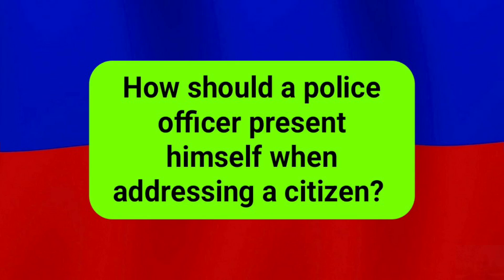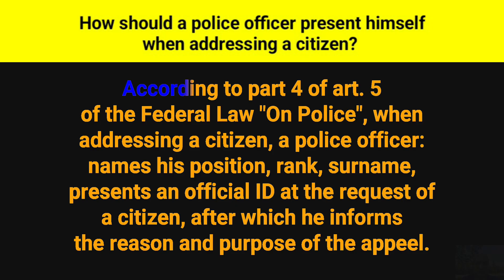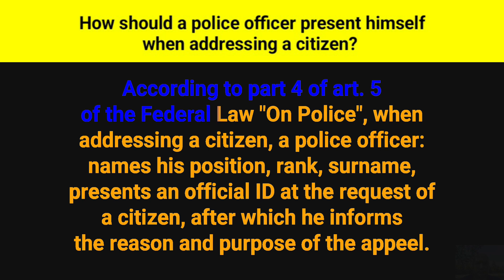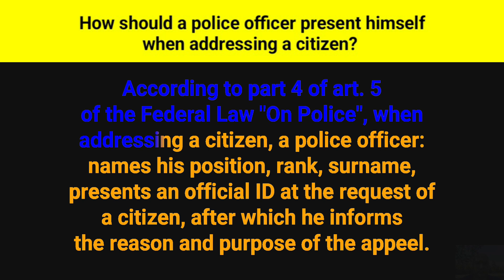How should a police officer present himself when addressing a citizen? According to Part 4 of Article 5 of the Federal Law on police, when addressing a citizen, a police officer names his position, rank, and surname, presents an official ID at the request of a citizen, after which he informs the reason and purpose of the appeal.